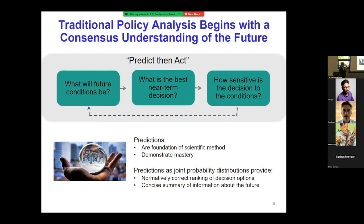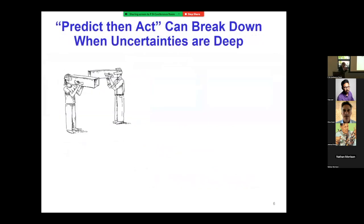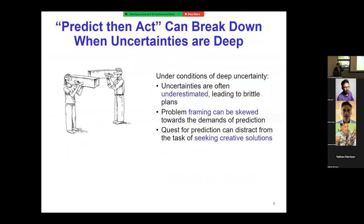Predictions are the foundation of the scientific method — that's how we adjudicate whether we're moving toward truth. But there's a bunch of problems where sole focus on that can lead us astray under conditions of deep uncertainty. Among the things that can go wrong: we can be overconfident and end up with brittle policies, focus on the parts we can predict while leaving aside squishy but equally important parts, or create policy gridlock where uncertainty is weaponized.